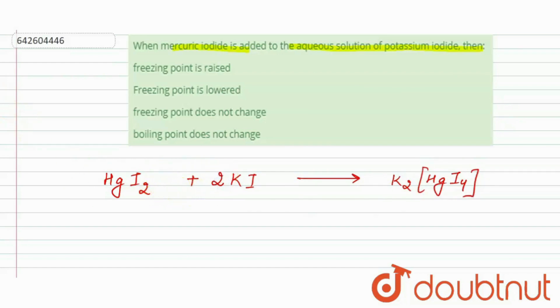So, for this reaction, we know that here association occurs, right? Here is association. So, if here is association, then i, that is van't Hoff factor, will decrease because it relates to the dissociation.